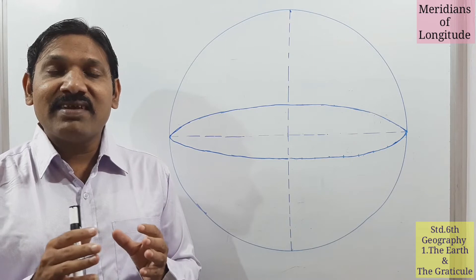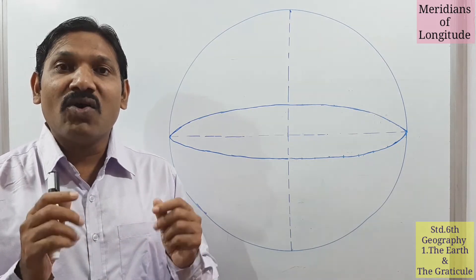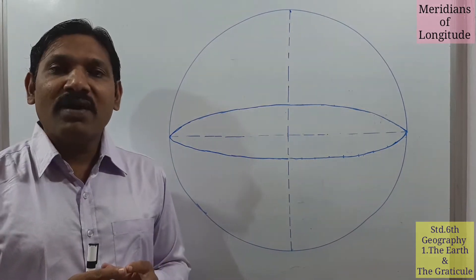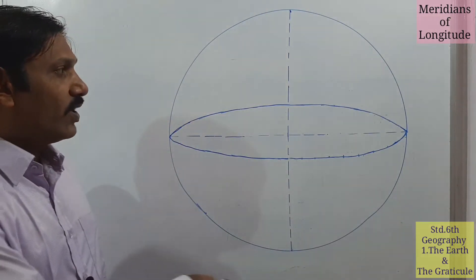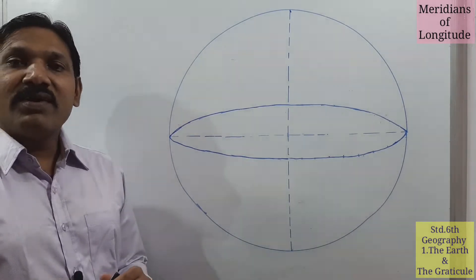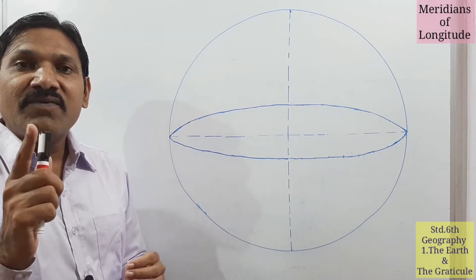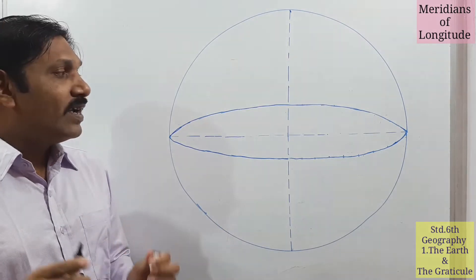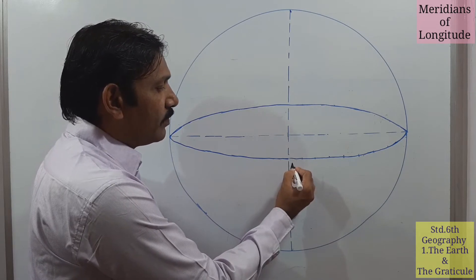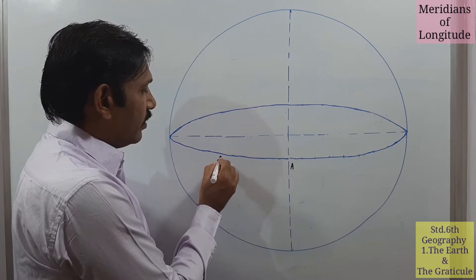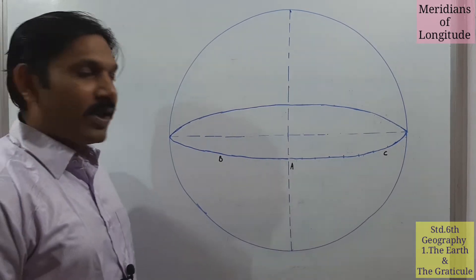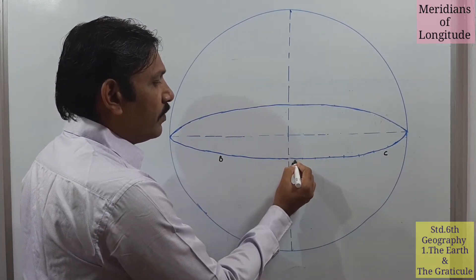What are these longitudes actually on the globe? See here on the whiteboard I have drawn a rough diagram of the sphere. As we have done one activity — figure number 1.9 — in that figure we have seen points A, B, and C. This activity we have done already, and it has 0 degrees.